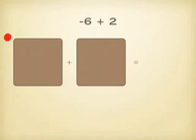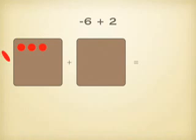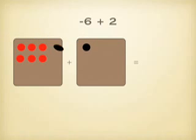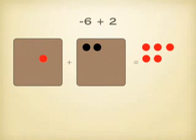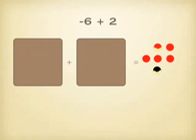So how about negative 6 plus 2? That's 6 negatives: 1, 2, 3, 4, 5, and 6. And 2 positives. So when they merge together and I add them into one big pile, the positive and the negative cancel, and the positive and the negative cancel. So I'm left with negative 4.